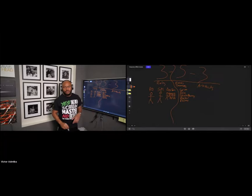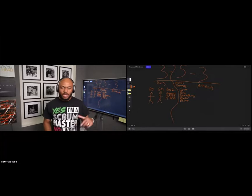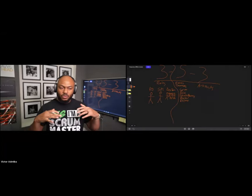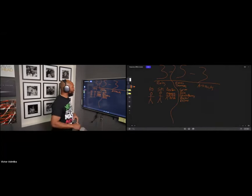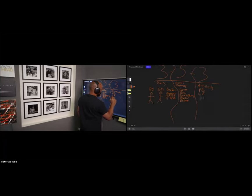These are the same ceremonies we will cover and simulate in our program. And then the three artifacts: we've got the product backlog, the sprint backlog, and the product increment.